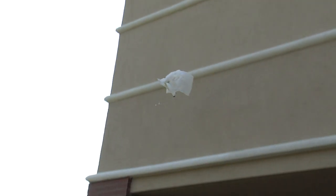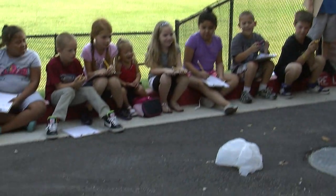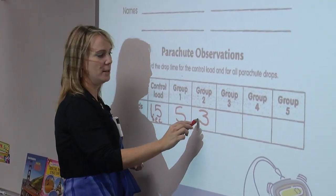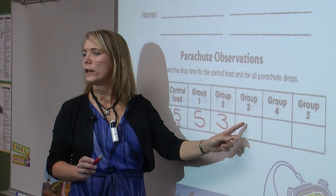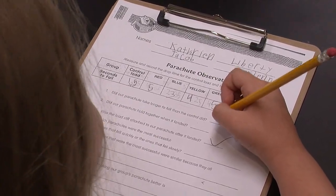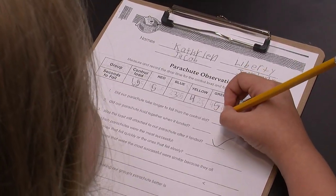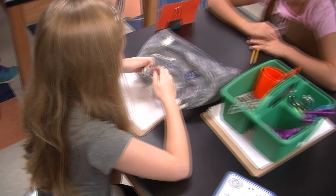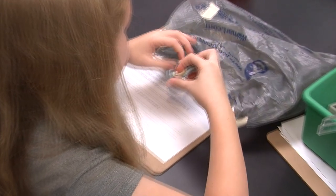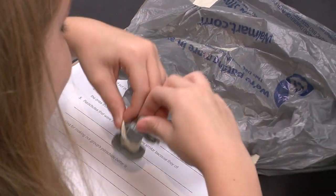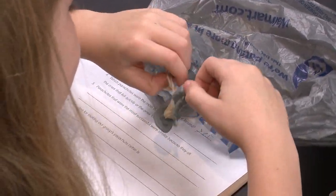When we come back, we look at all the data. They look at all of the different groups. We graph the data to find out what kind of design worked better than another kind of design. And then, after all of that is done, they reflect on what they would change about their parachute if they were going to do it again.